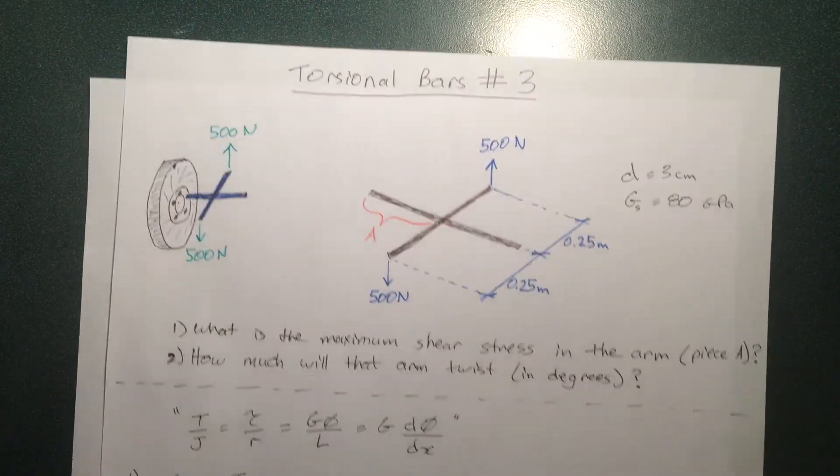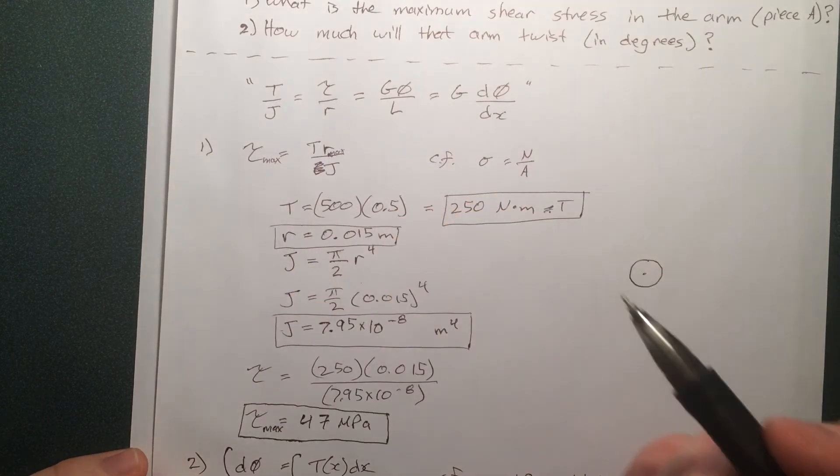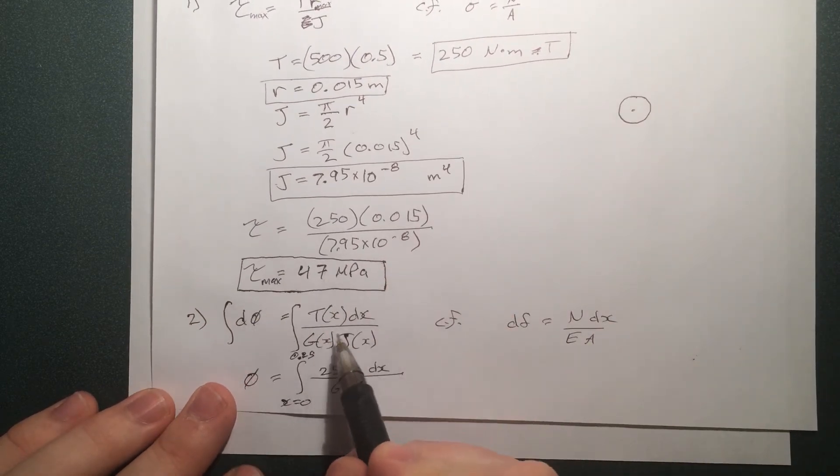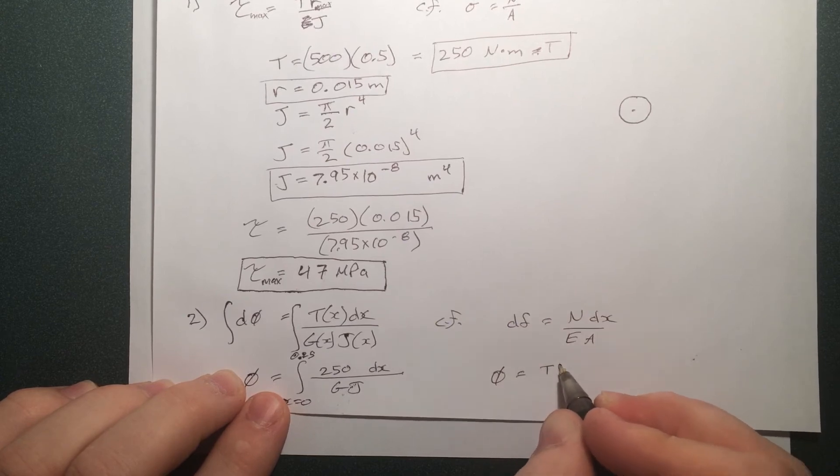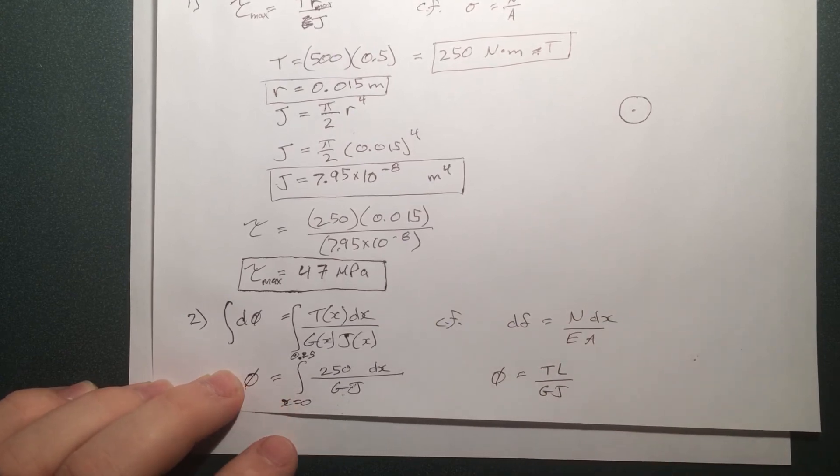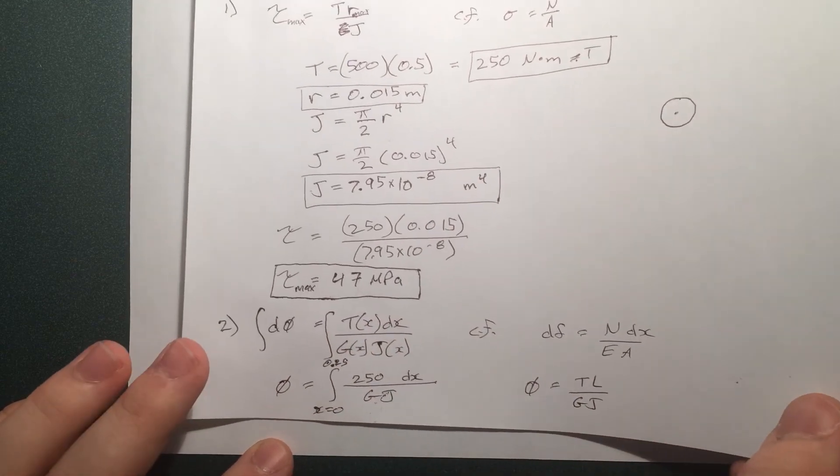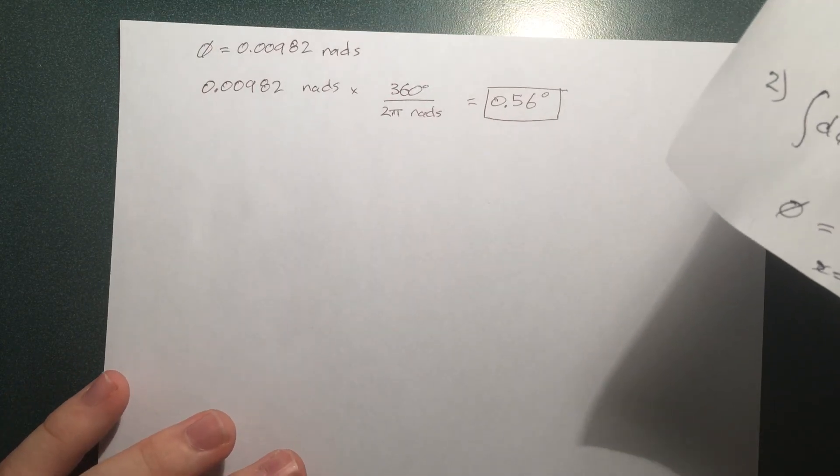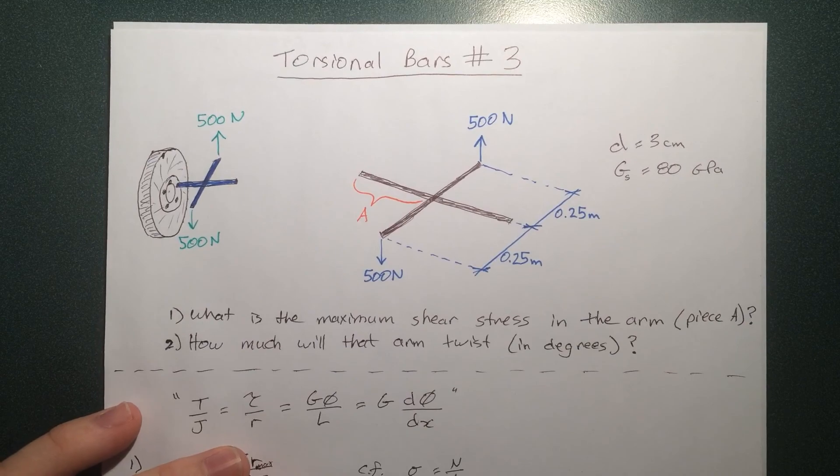Let's just recap what we did. We found the maximum shear stress by using this equation here. We knew it was a maximum one because we used the maximum R value. Then we went to finding the total twist, and we used the differential form of the equation here, although we could have just used phi equals TL over GJ. But this only works for discrete scenarios. Although this is a discrete scenario, I've decided to use this one just to make it more familiar for you guys when you see the varying situations later on. And then we found the total twist to be 0.56 degrees. Thanks so much for watching guys. Hope this helps you out, and I'll see you in my next torsional bar video.